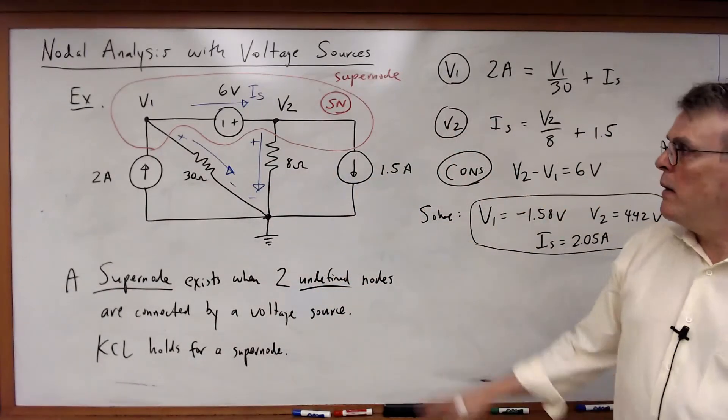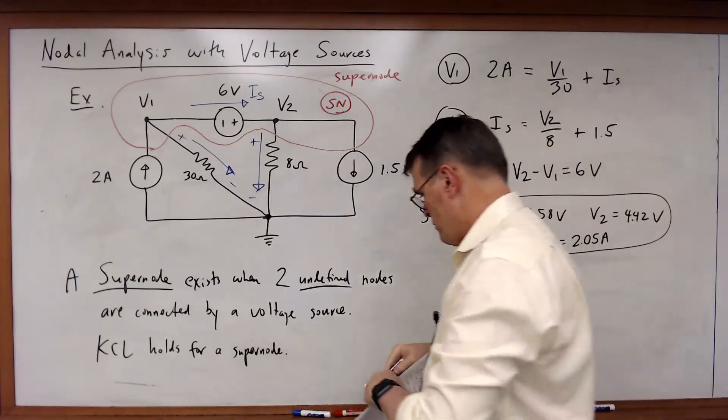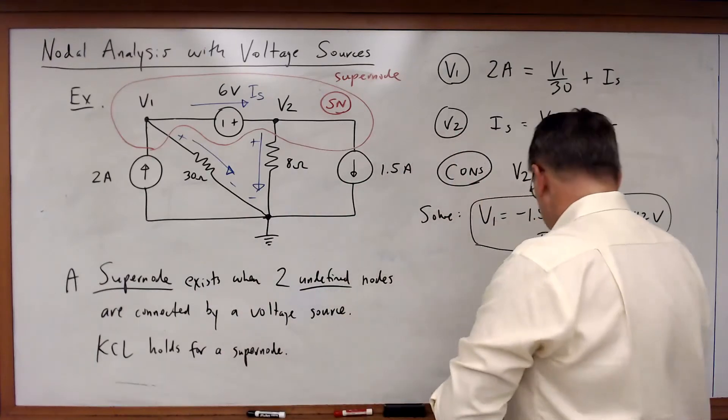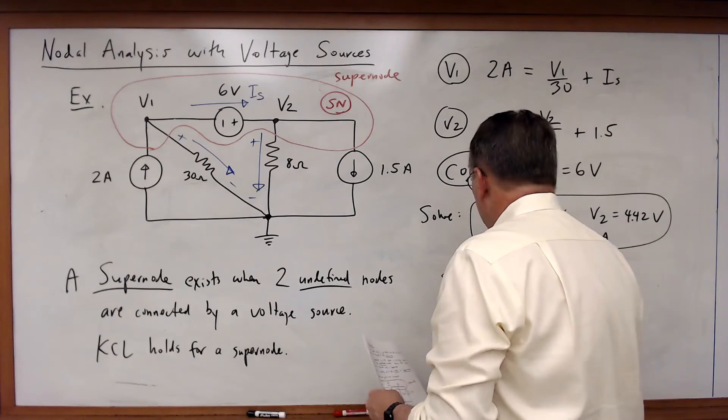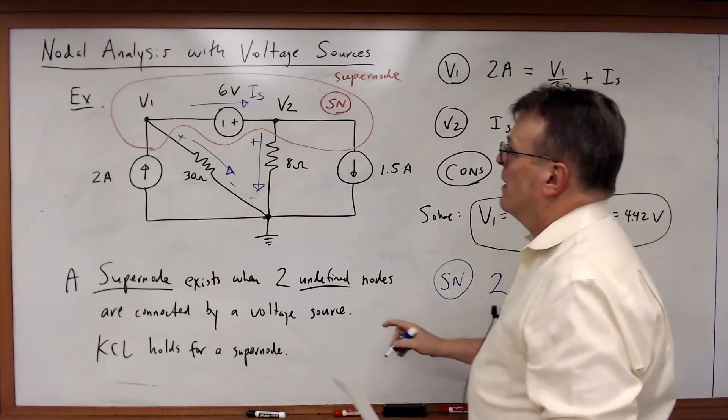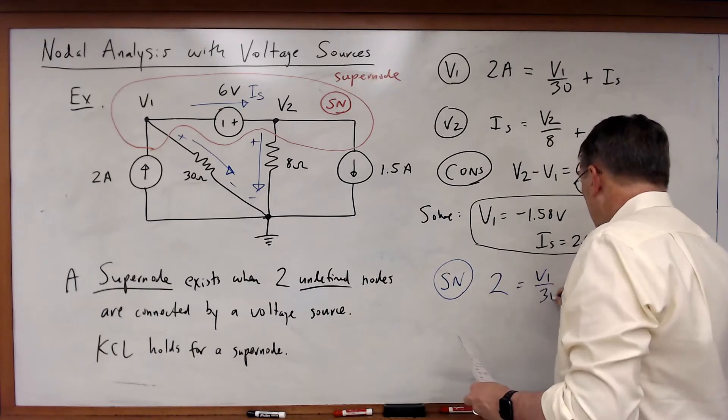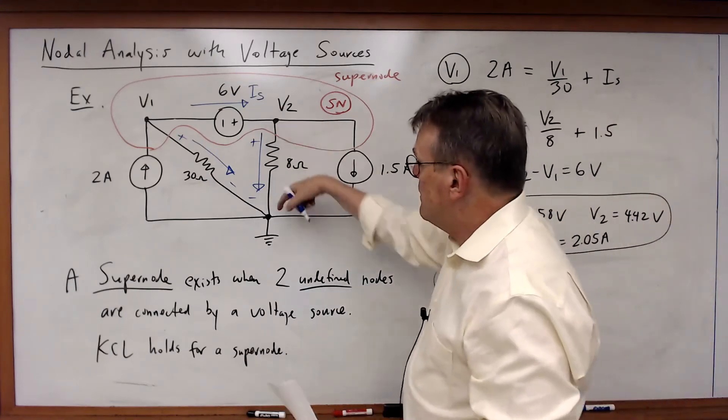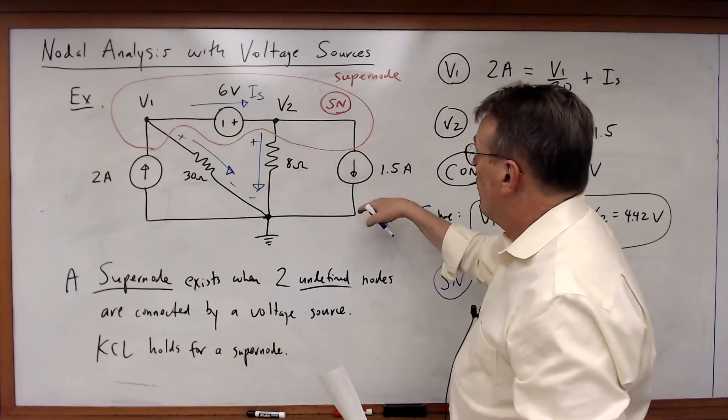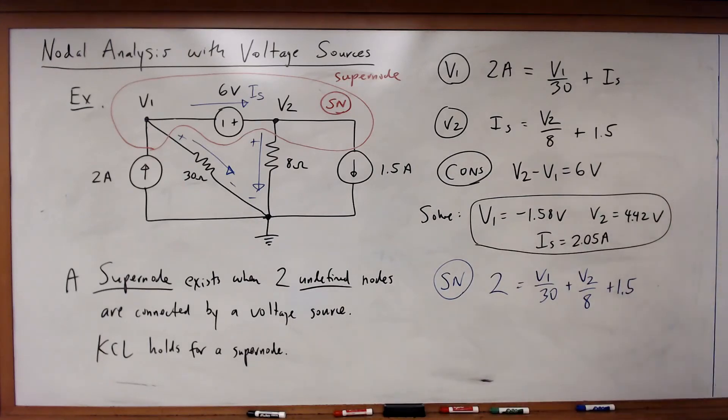Let's write the KCL equation for that supernode, for that entire group together, those two nodes. So, in this case, the supernode equation is 2 amps going in is equal to V1 over 30 plus V2 over 8 going out plus 1.5 amps.